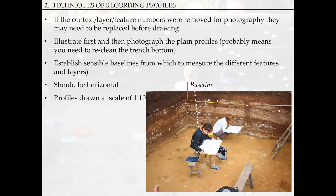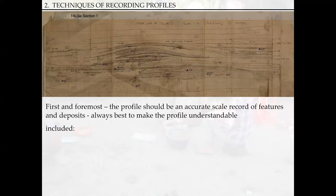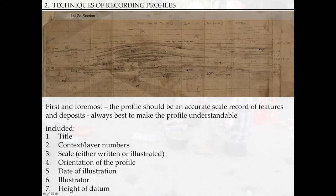Here we have a drawing of a profile from Loch Bac in southern Vietnam. First and foremost, the profile should be an accurate scale record of features and deposits — always best to make the profile understandable. We've put the baseline across and drawn the various deposits onto the profile. You should include the title at the top: what are you actually drawing — for example, west wall of trench one. We've got the context numbers added onto the drawing, which is very important so you know which layer belongs to which and what the relationships are between layers and deposits.